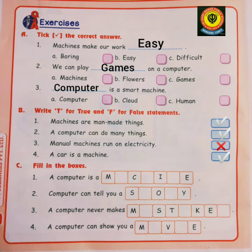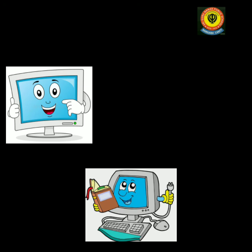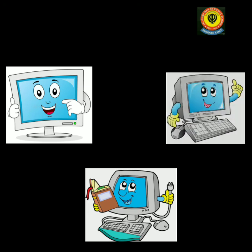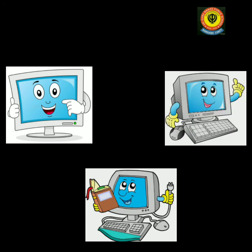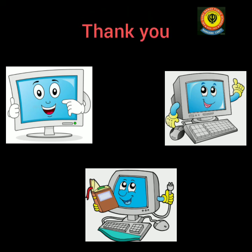Next is C — fill in the box with the correct spelling, which is already filled for you. Class, I hope you understand what a computer is — a computer is an electronic machine. This is all for today. In the next class, we will study more about computers. Stay safe, stay healthy.